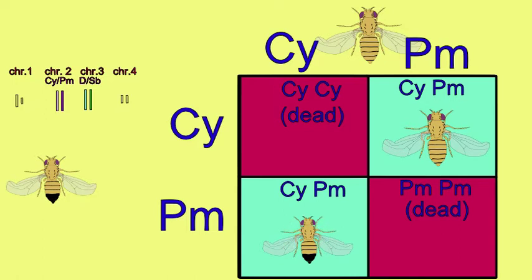And so all of the flies from this cross will possess a chromosome 2 with curly and a chromosome 2 with plum because any other combination is lethal. And these chromosomes have been modified so that chromosomal mutations such as inversions will ensure that there is never crossing over or recombination between these chromosomes.